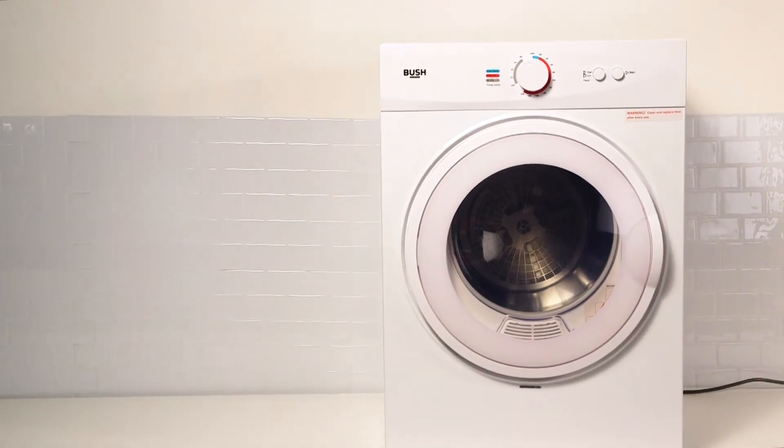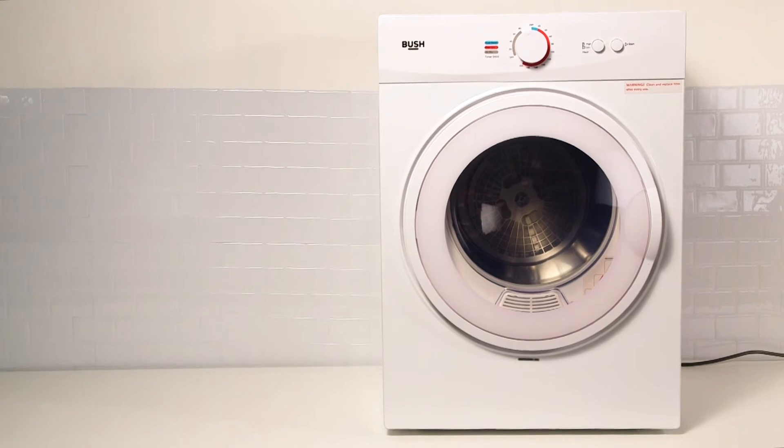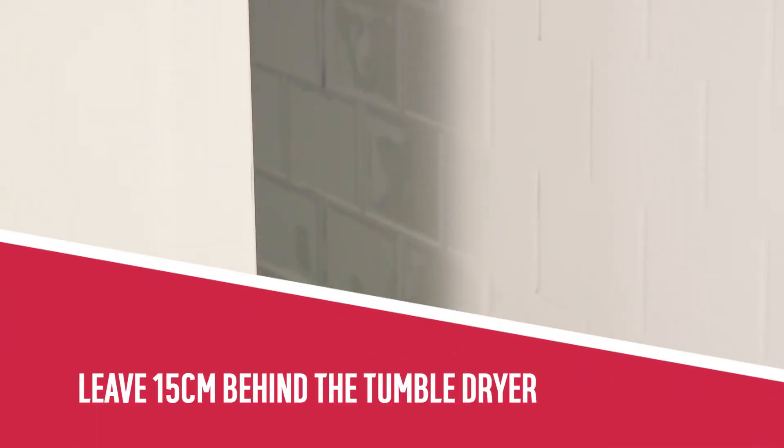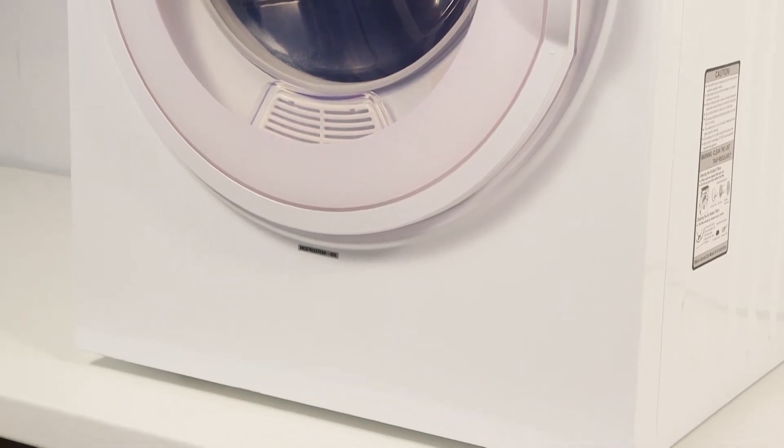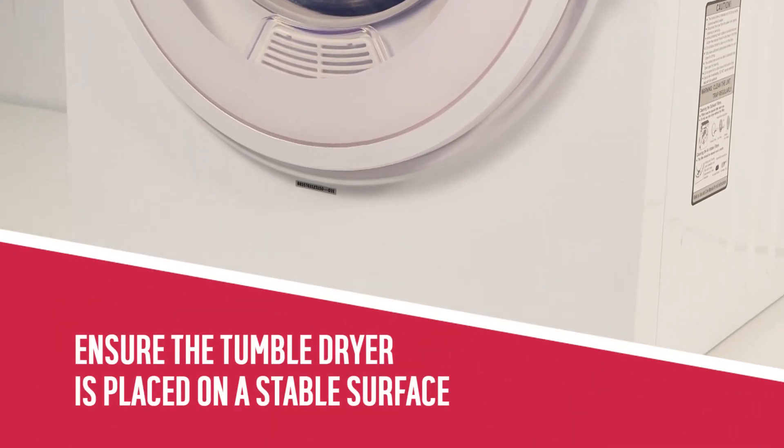Firstly, ensure there is sufficient space for the appliance. Leave a space of 15cm behind the tumble dryer. Ensure that the tumble dryer is placed on a stable, flat surface.